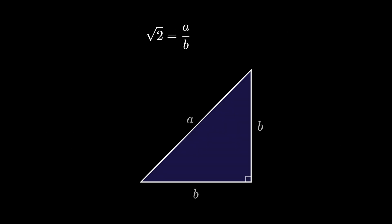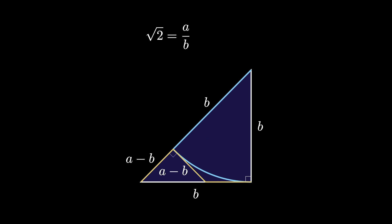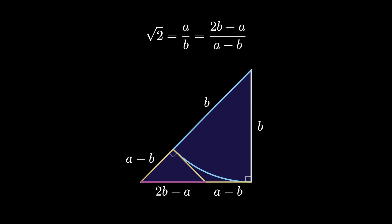So I like this visual proof that the square root of 2 is irrational using the right isosceles triangle, because it not only proves that the square root of 2 is irrational, it also gives more number-theoretic information about the convergents — the numbers that approximate the square root of 2 the best. This visual proof appeared in the American Mathematical Monthly in an article by Tom Apostol. Check out the description for links to the original.